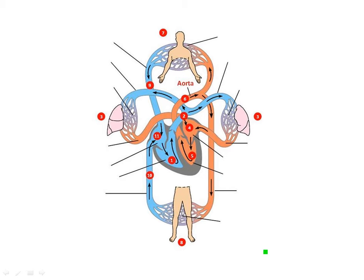When you begin looking at this first image, you see the heart. Remember the heart is a two-sided pump. One side of the heart is responsible for taking blood out to the lungs, and the other side is responsible for taking blood out to the rest of the body. Let's look briefly at that pathway and then get into a little bit more detail.